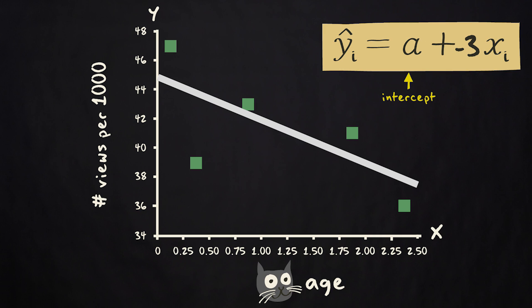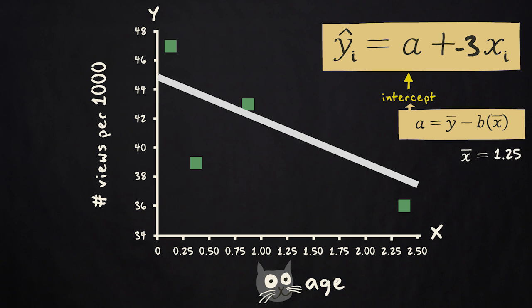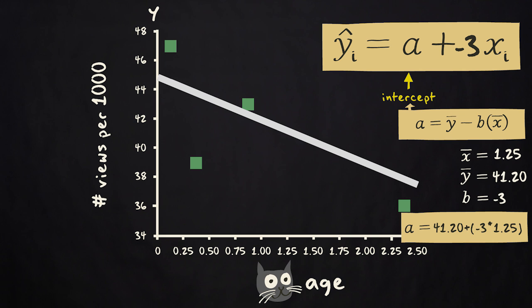Finally, we have the intercept. The intercept is equal to the mean of y minus the regression coefficient times the mean of x. Suppose in our sample the mean cat age is 1.25 years, and the mean video popularity score is 41.20. We just determined that the regression coefficient is minus 3. So the intercept equals 41.20 minus minus 3 times 1.25, which equals 44.95.